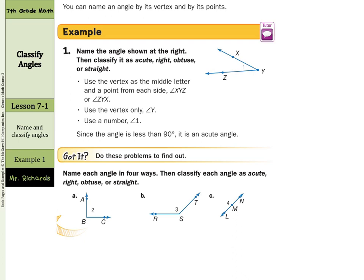Name the angle shown at the right, then classify it as acute, right, obtuse, or straight. The vertex goes as the middle letter, and a point from each side is one way to name the angle. So we have vertex Y — we could say XYZ, ZYX, use only the vertex Y, or use the number one. The angle is less than 90 degrees, so it's an acute angle.